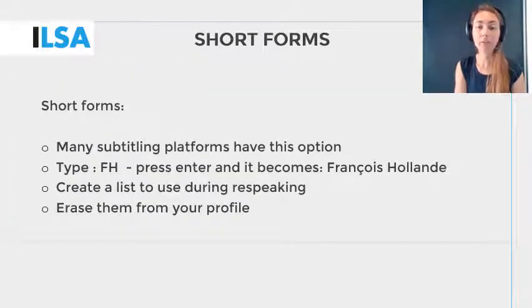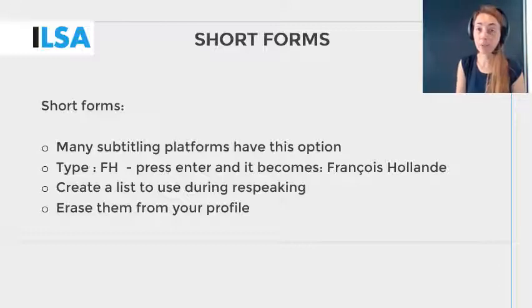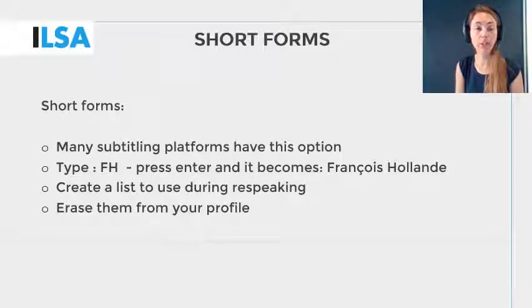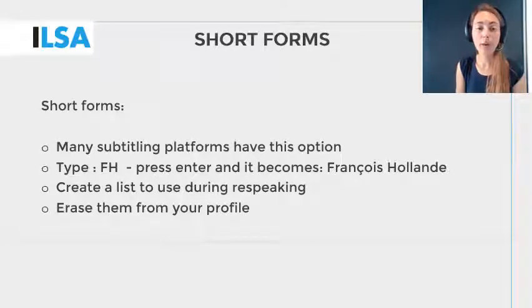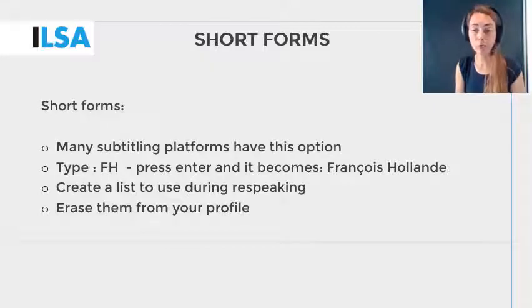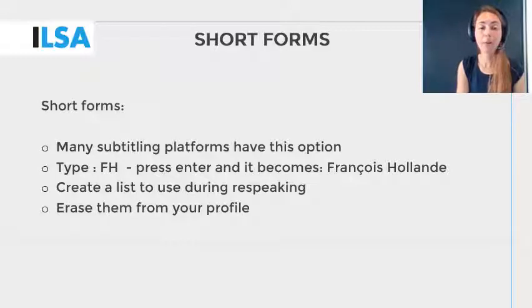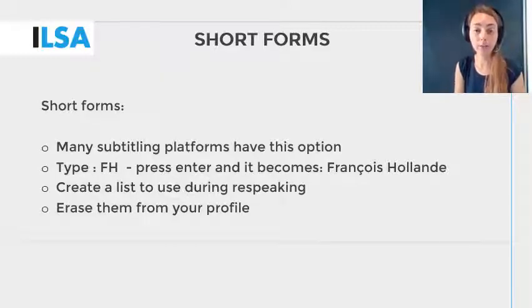If you find that the software doesn't render a name or a term correctly, you will have to find a way to help the system. All re-speakers develop their own system and have their own preferences. Choices can also depend on the language you re-speak into. Some re-speakers will barely use their keyboard; others will use it quite often. One way of helping the software is to use the keyboard to create short forms. When you choose to work with short forms, you will type a short version of the word that you'd like to see appear on the screen. Many subtitling programs allow you to create a list of short forms.